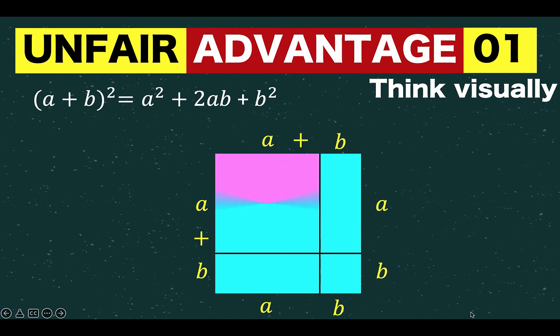You have this pink square, the area of that is a squared, then you have the smaller yellow square with an area of b squared, and you have two rectangles each with an area of a times b.